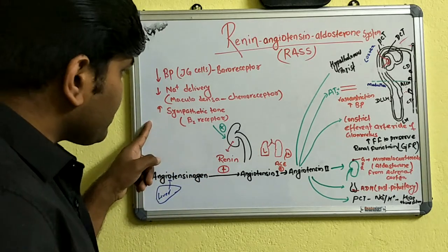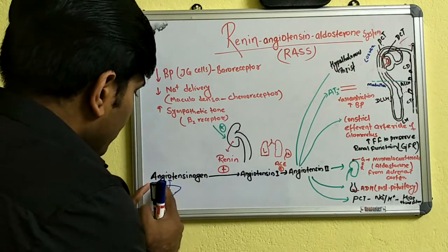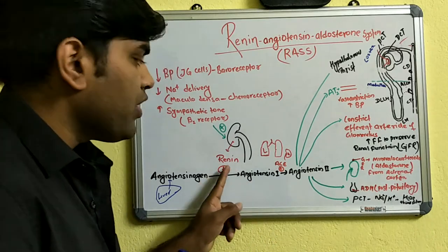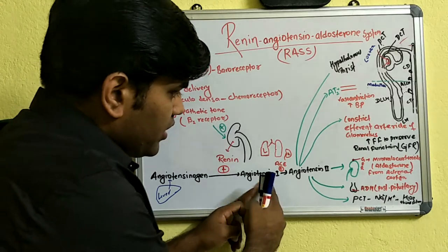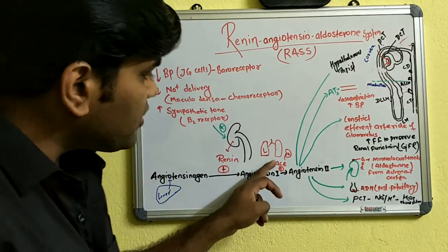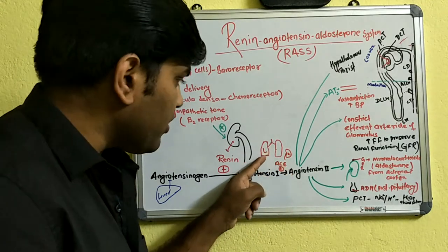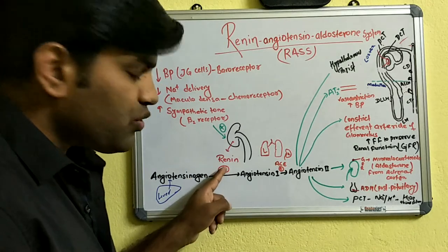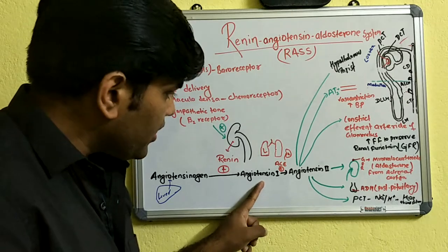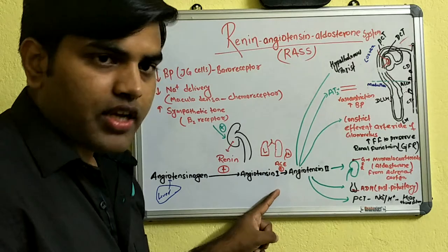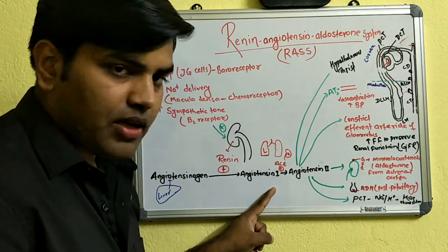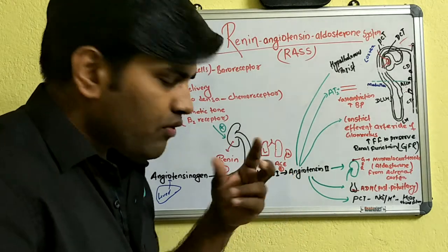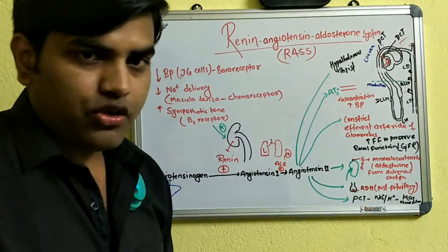After renin is released, its main function is to convert the protein angiotensinogen — synthesized by the liver — into angiotensin-1. Angiotensin-1 is then converted into angiotensin-2 by an enzyme known as angiotensin-converting enzyme (ACE), which is formed in the lungs as well as the kidneys. Renin is secreted into the blood, converting angiotensinogen to angiotensin-1, which circulates to the lungs where ACE — predominantly from the lungs — converts it into the active angiotensin-2.